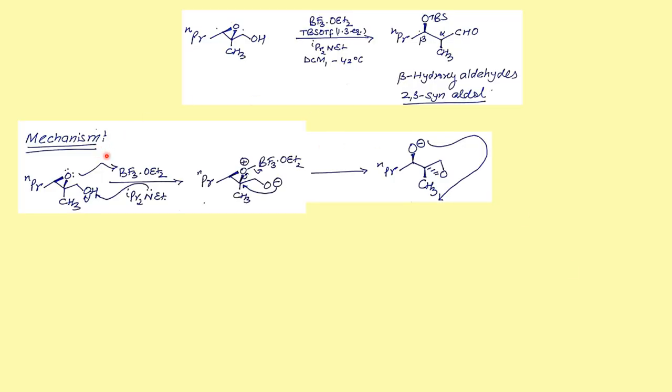If we look at the first example regarding the mechanism, the most important thing is we're using a Lewis acid, which is BF3. We're using TBS triflate, which is used for the formation of the TBS ether of the formed alcohol. And we're using diisopropyl ethylamine, which is a base.